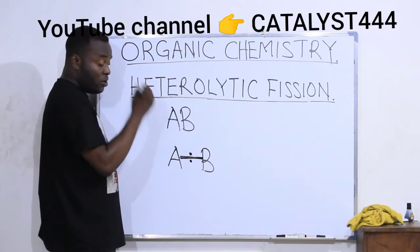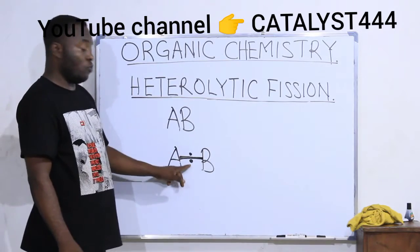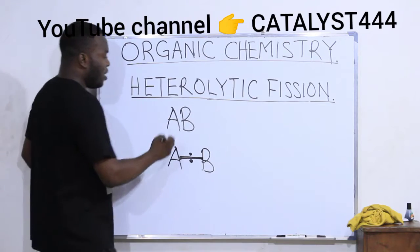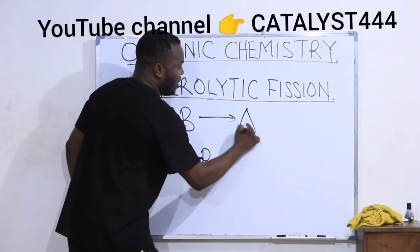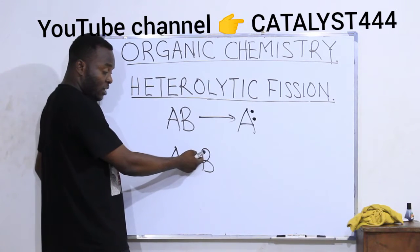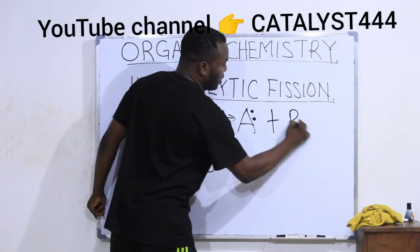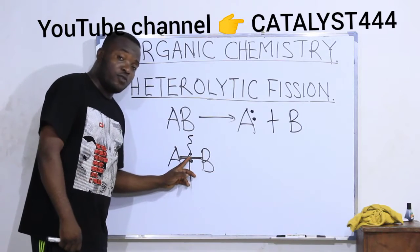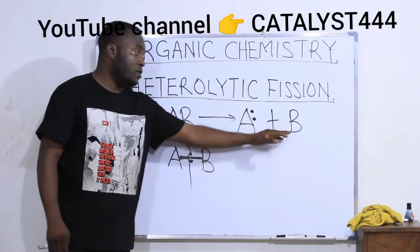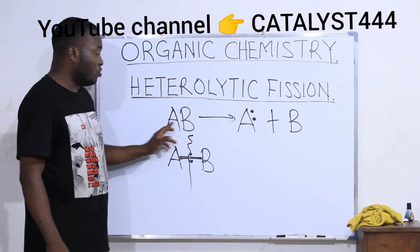Majority of organic compounds undergo covalent bonding. Assuming this is an organic compound, the bond between them is a covalent bond, which means the two electrons used in forming the bond were contributed by the two bonding atoms — A contributed one, B contributed one. Now when we break this compound, if atom A collects both electrons after the breaking, while B takes nothing, the two electrons were not equally shared between A and B. Only A took both of them and B was given nothing. This type of bond breaking involving unequal sharing of electrons is what we call heterolytic fission.